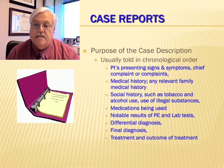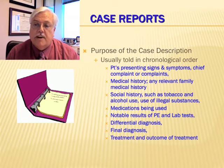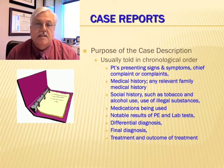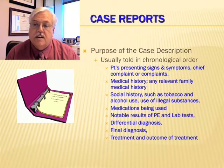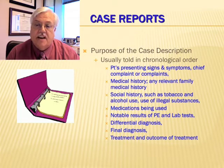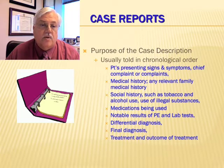The case description is usually told in chronological order. For instance: the patient's presenting signs and symptoms, chief complaints, medical history, any relevant family medical history, social history such as tobacco and alcohol use or use of illegal substances, medications being used, notable results of the physical exam and lab tests, a differential diagnosis, the final diagnosis, and the treatment and outcome of the treatment.